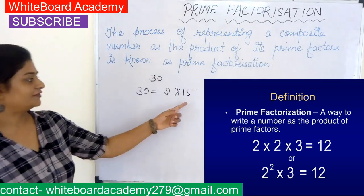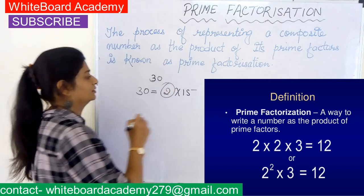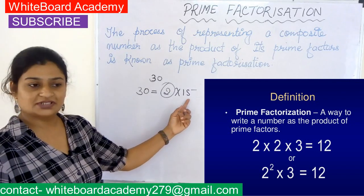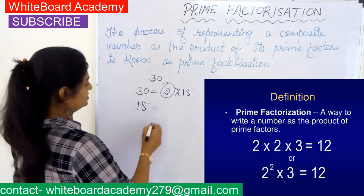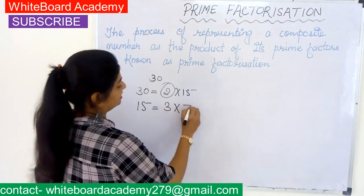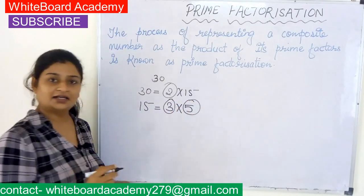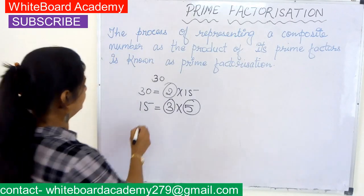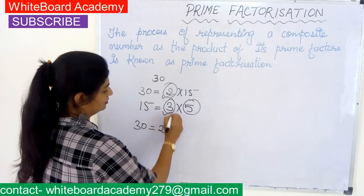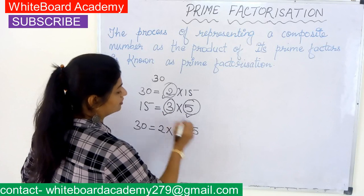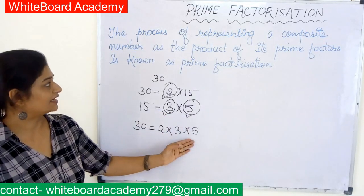When we multiply 2 with 15 we get 30, so we got one prime factor. But 15 is still a composite number, so let's convert it again into prime factors. 15 can be written as 3 into 5, and here 3 and 5 are both prime factors. So we can write 30 as 2 into 3 into 5 — it is the product of its prime factors.